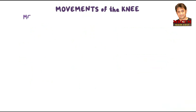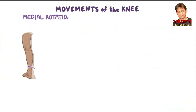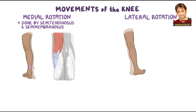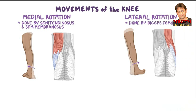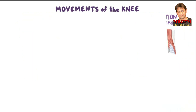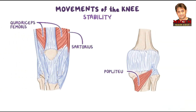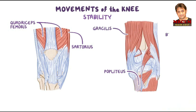More minor movements of the knee are medial rotation, primarily done by the semitendinosus and semimembranosus, as well as lateral rotation, primarily done by the biceps femoris. Muscles that contribute to the stability of the knee include the quadriceps femoris, sartorius, popliteus, gracilis, biceps femoris, semitendinosus, and semimembranosus.